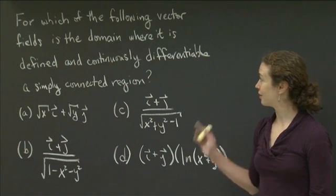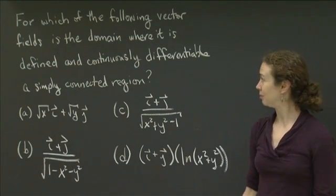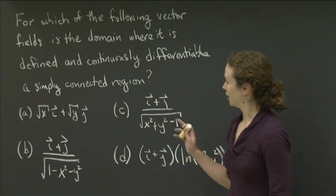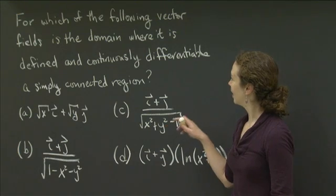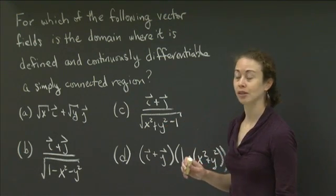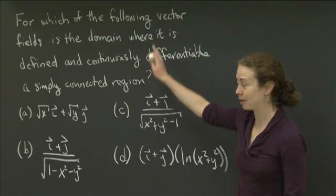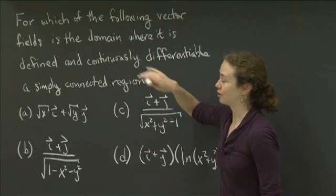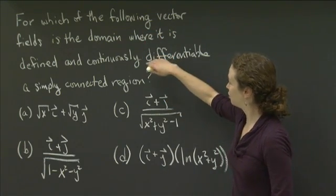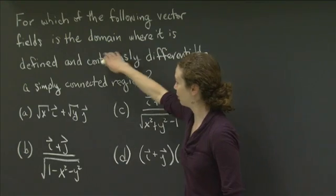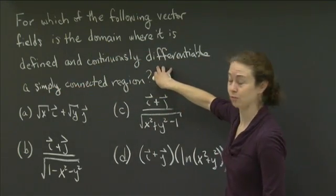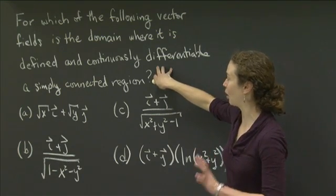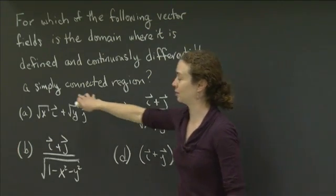Welcome back to recitation. In this video, I'd like us to work on the following problem. For which of the following vector fields is the domain where each vector field is defined and continuously differentiable a simply connected region? We're starting with some different vector fields, and we want to determine first the domain for each vector field where it is both defined and continuously differentiable. Then, once you've determined that domain, the next objective is to determine whether or not that domain or region is simply connected.